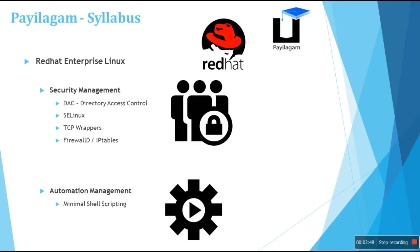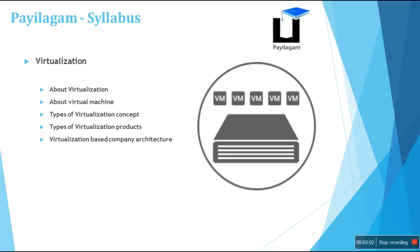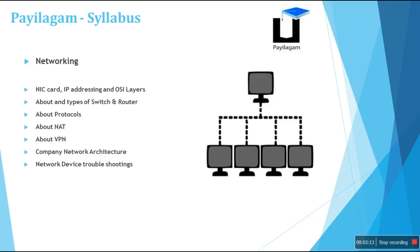In automation management, we will teach you minimal shell scripting, and in the final project you will do auto-configuration of typical Linux servers. Additionally, we will teach you virtualization techniques — virtual machines, available products, concepts, and company architecture in virtualization. In networking basics, we will cover NIC cards, IP addressing classes, OSI layers, switch and router devices, NAT, VPN protocols, company network architecture, and how to troubleshoot network devices.